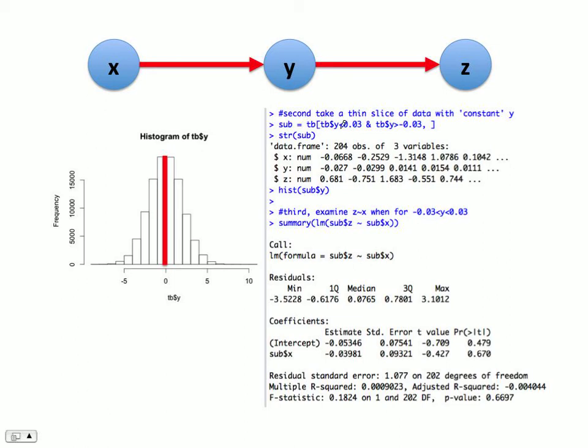So to do this, I basically take a thin slice of the y in the entire spreadsheet. So here I take a thin slice of y between less than 0.03 and greater than minus 0.03. So basically, there is minus 0.03 and there is a positive 0.03 for x and z. And then we do a regression between x and z. This is a subset of the original spreadsheet.